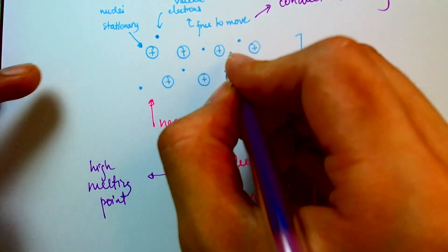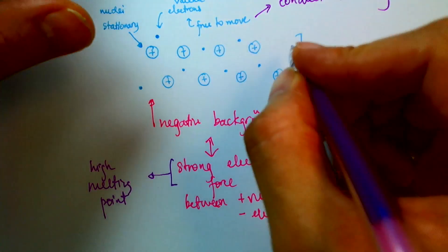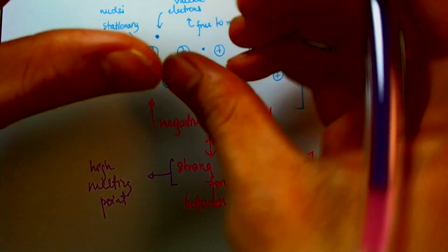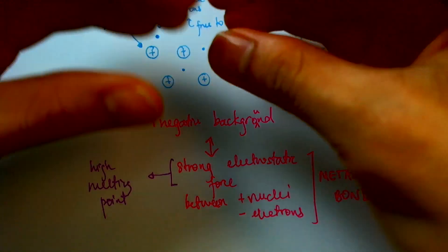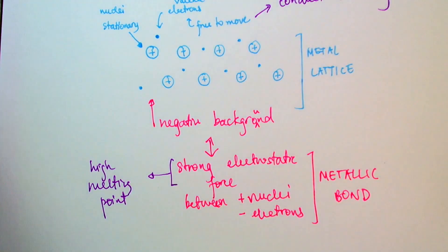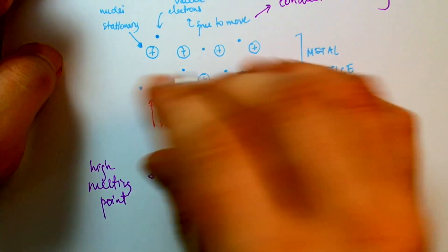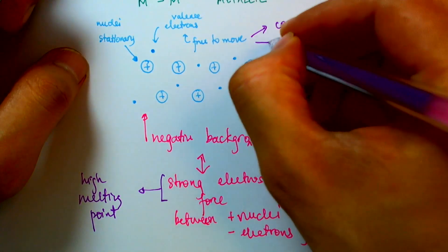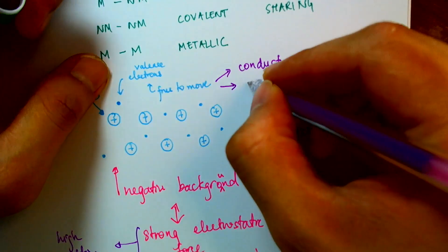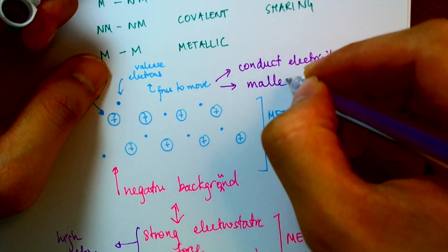And because these electrons are free to move, as I reshape the metal, the electrons are able to flow around the nuclei to maintain the bonds in the metal. So this also gives rise to a property called malleability.